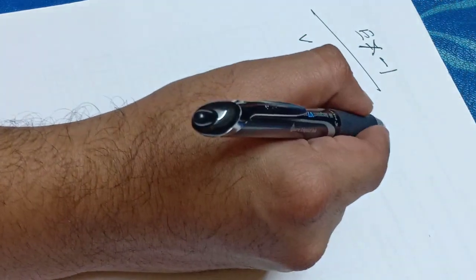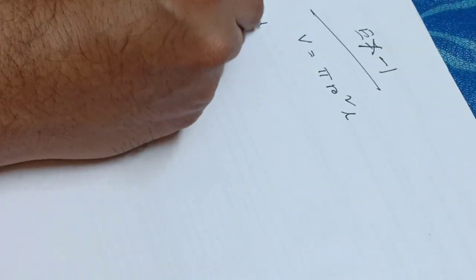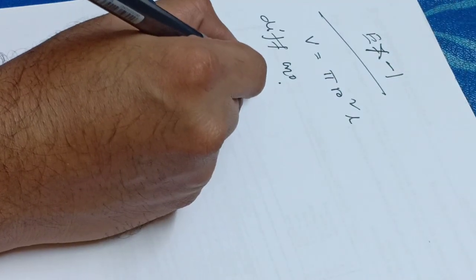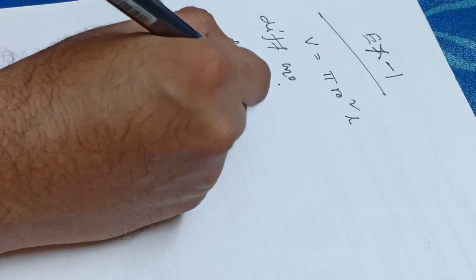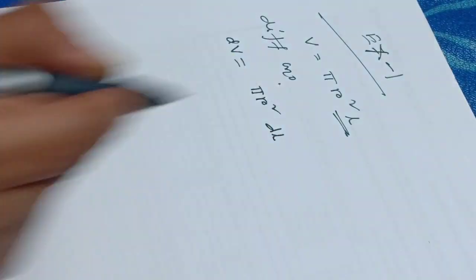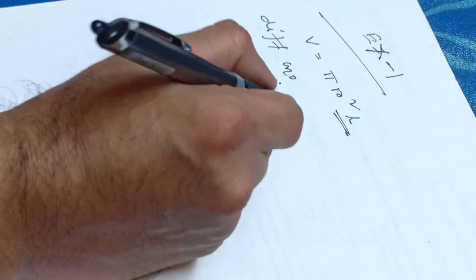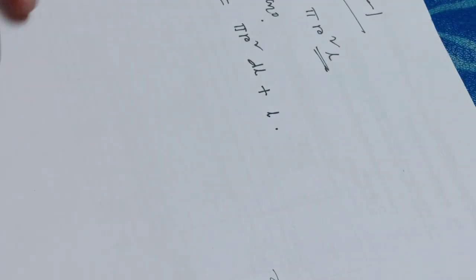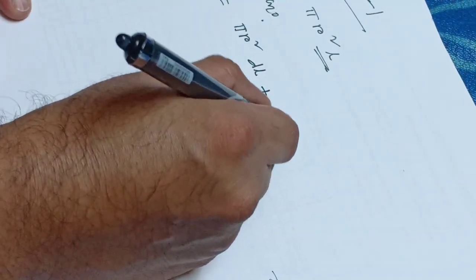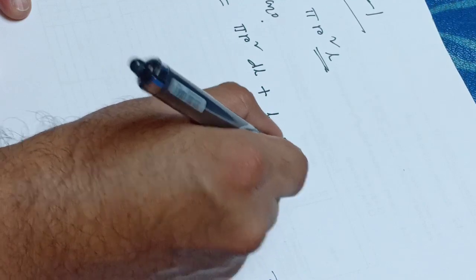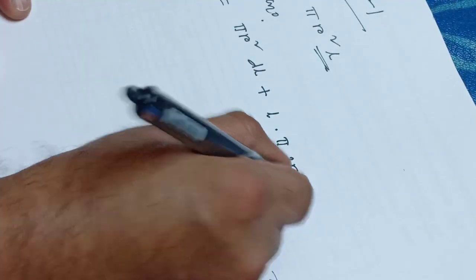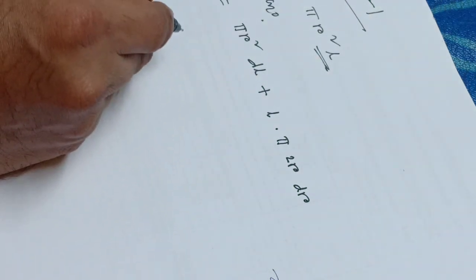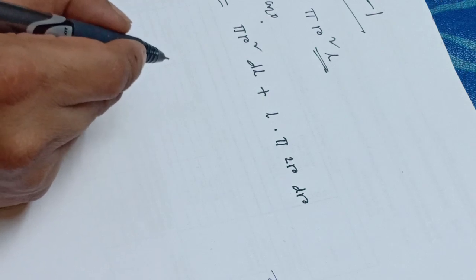Pi r square r. Now we will do the differentiation. The differentiation is V. Pi r square is L, the L is DL, plus pi r square is L. If we didn't like the L, we will do the same: pi r square is L, pi r square is L, 2R is L. We will do L – pi r square is L.